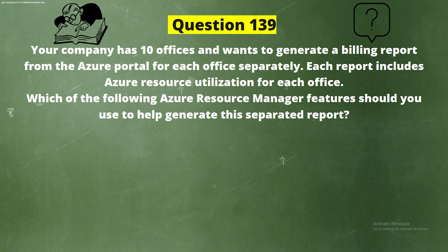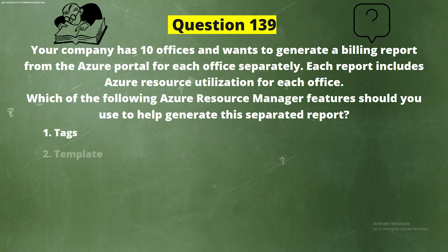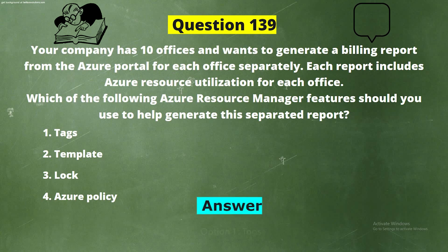Question 139. Your company has 10 offices and wants to generate a billing report from the Azure portal for each office separately. Each report includes Azure resource utilization for each office. Which Azure Resource Manager feature should you use to help generate this separated report? Options: Option 1, Tags; Option 2, Template; Option 3, Lock; Option 4, Azure Policy. The correct answer is Option 1, Tags.